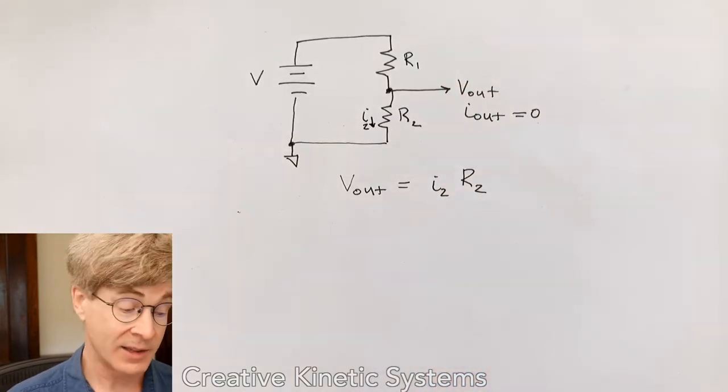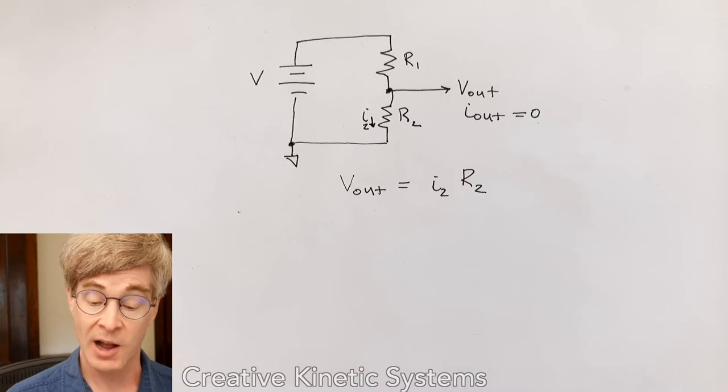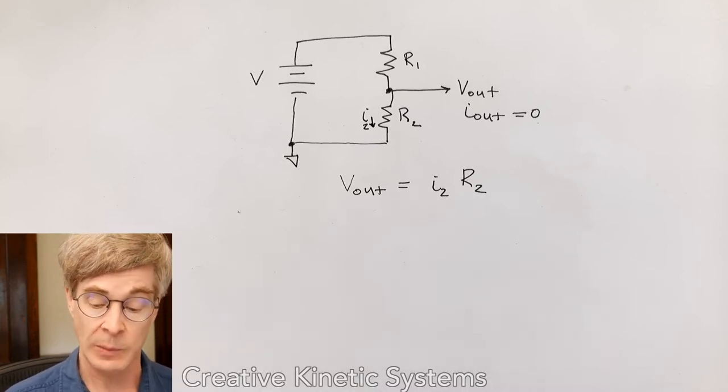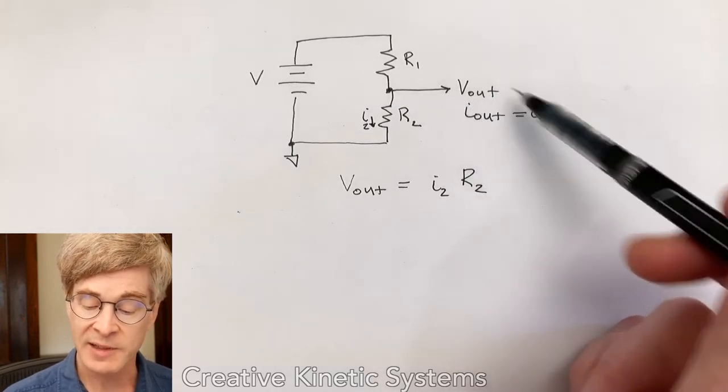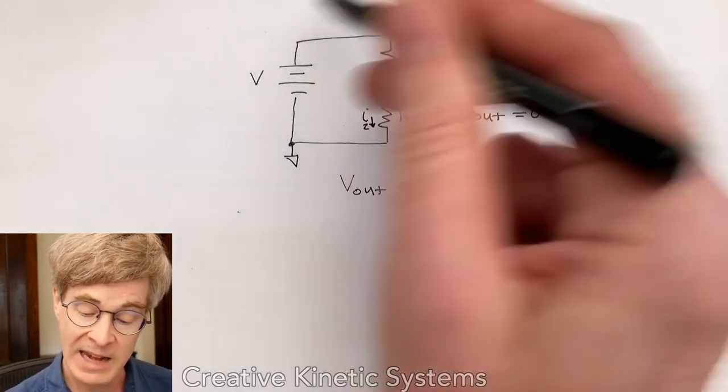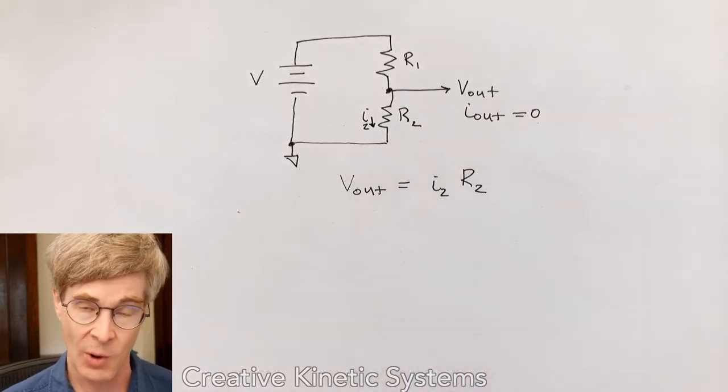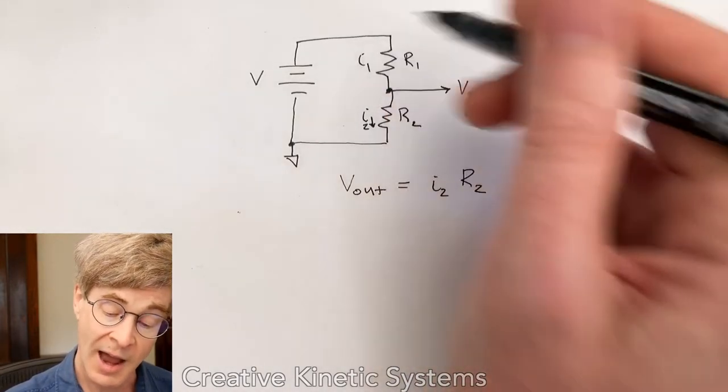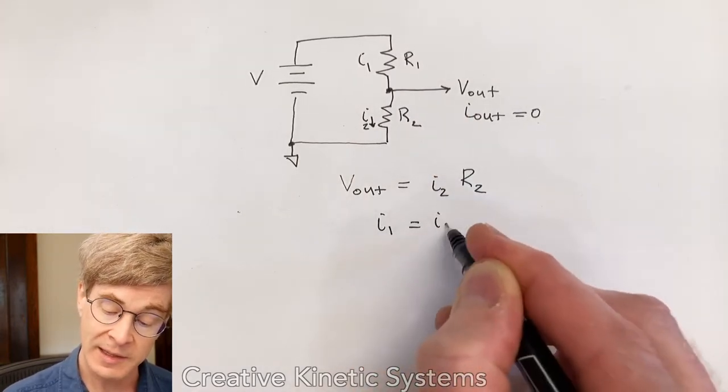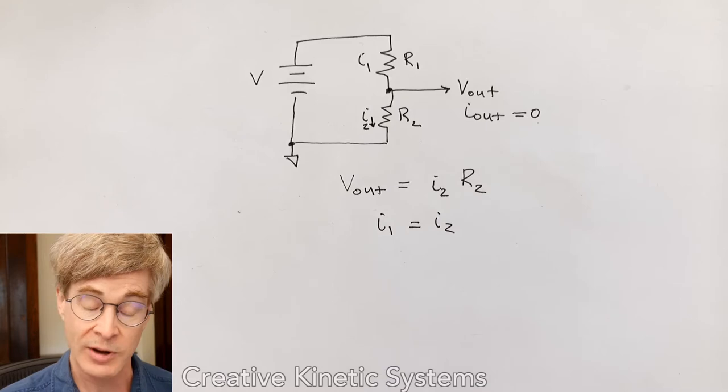One thing we can look at is we can apply Kirchhoff's current law to assume that the currents through each of the resistors is the same current. Once we've decided that no current is flowing out of the node at the middle of the divider, then any charge flowing into R1 has to flow out through R2. It can't go anywhere. So we can say that I1, the current through R1, is the same as the current through R2. They're equal.